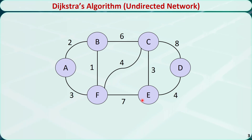Now let's see an example. This is an undirected network. It has 6 nodes and 9 arcs. Suppose we want to find the shortest path from node A to node D.